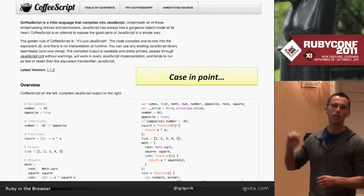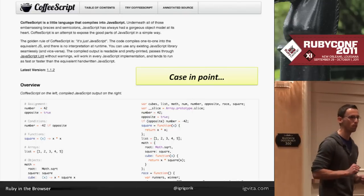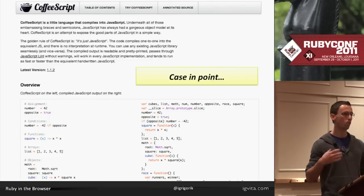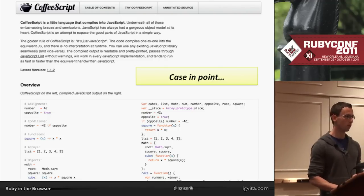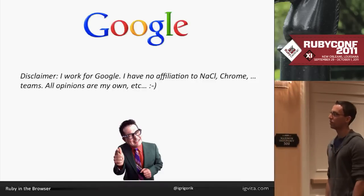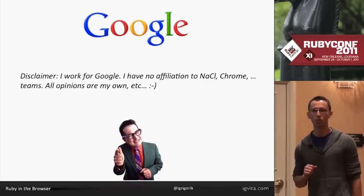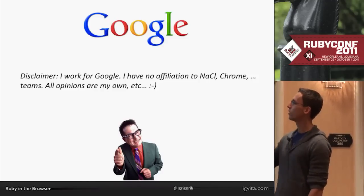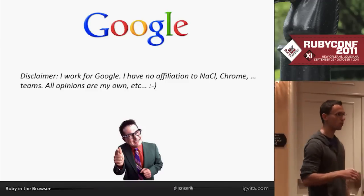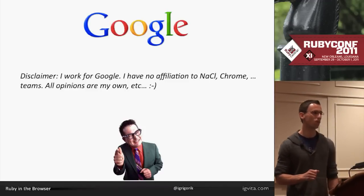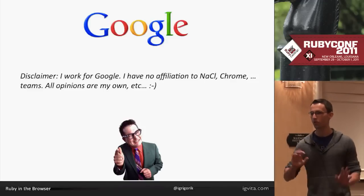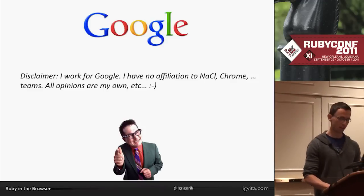This is one instance of where we innovated within the browser and everybody goes crazy over it. So imagine what would happen if we actually had more languages, more possibilities of running this stuff in the browser. Now, this is a good time to step back and say: yes, I work for Google now. I'm not affiliated with Native Client, Chrome, or any other teams. I'm only pathologically curious, so I tend to talk to a lot of those guys. But all opinions are my own.